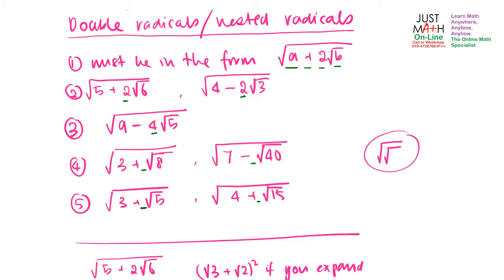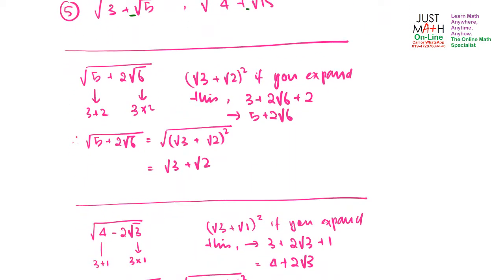Let's take a look at the first example: root of (5 plus 2 root 6). We know that 6 is actually 3 times 2, and 5 is actually 3 plus 2. So we use (root 3 plus root 2) and square the whole thing. If you expand this expression, you should be able to get this. Simplifying gives you back the original expression.